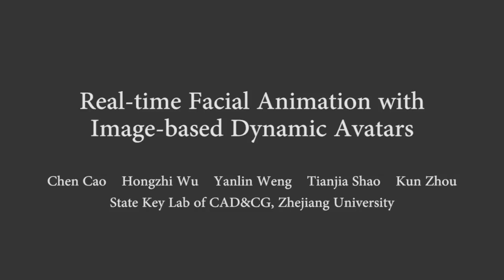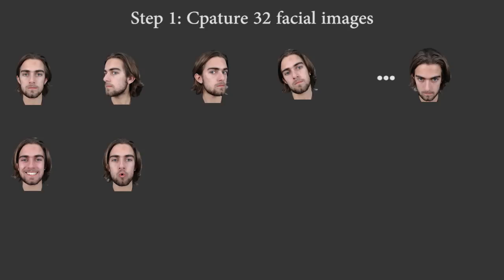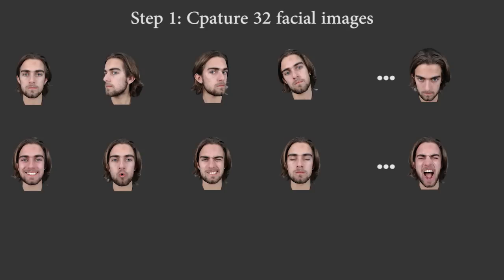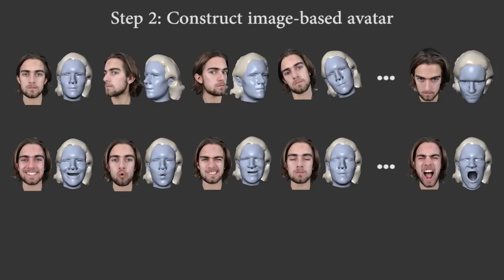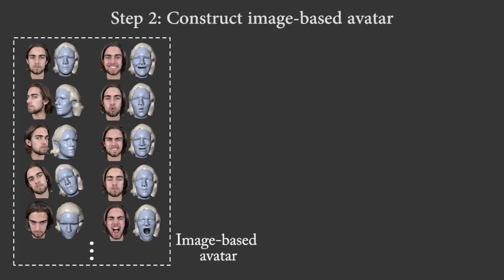We present a novel image-based representation for dynamic 3D avatars that can handle various hairstyles and headwear and can generate expressive facial animations with fine details. We use a web camera to take 32 photos of a user, sparsely sampled over head poses and expressions. We then construct a face blend shape and a morphable hair model from the captured images, which represent the coarse geometry of the face and hair.